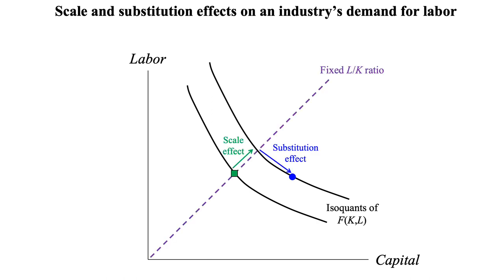Marshall, and also Sir John Hicks, decomposes the change from green to blue into two pieces: the scale and substitution effects. The scale effect reflects the fact that consumers demand more food because automation makes the food cheaper, but does not reflect any change in the relative amounts of capital and labor used in the production process. The substitution effect reflects the fact that automation makes production less labor intensive, but does not reflect any change in the amount of production. The full effect is the combination of the two.